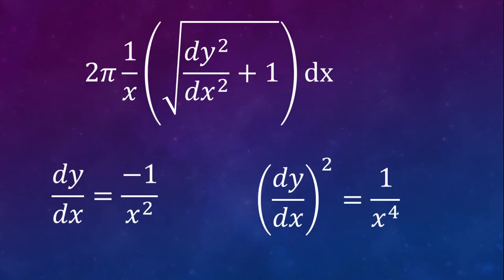Now we're gonna factor out a dx term to integrate this function with respect to x. And now we get 2π times 1 over x times the square root of (1 plus dy squared over dx squared). dy squared over dx squared is the same as (dy by dx) all squared.